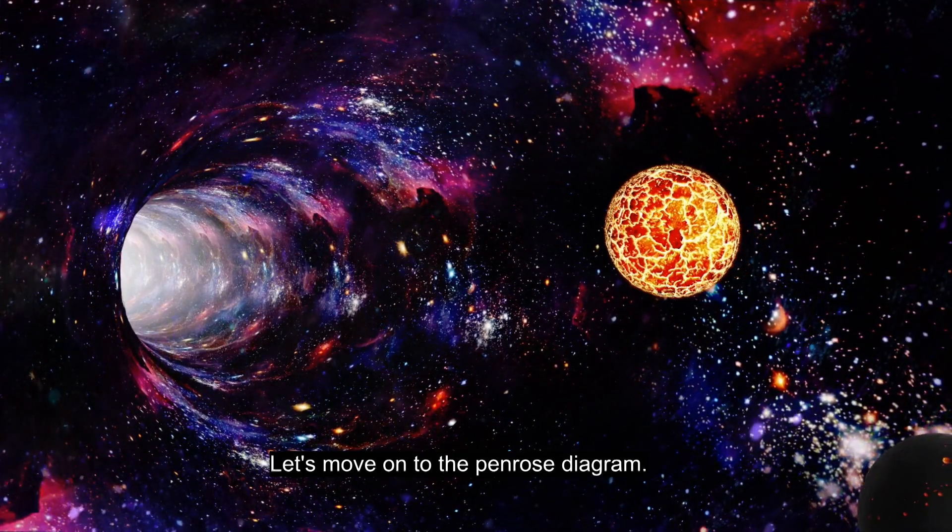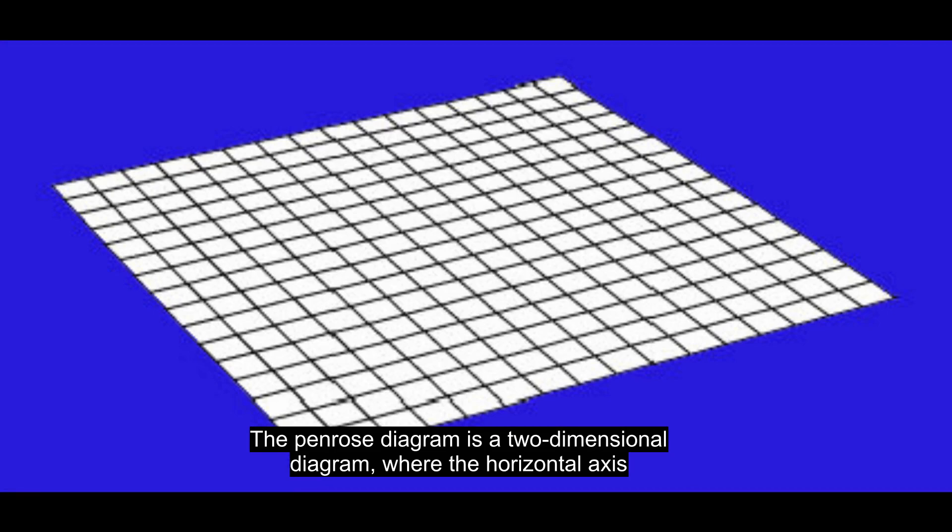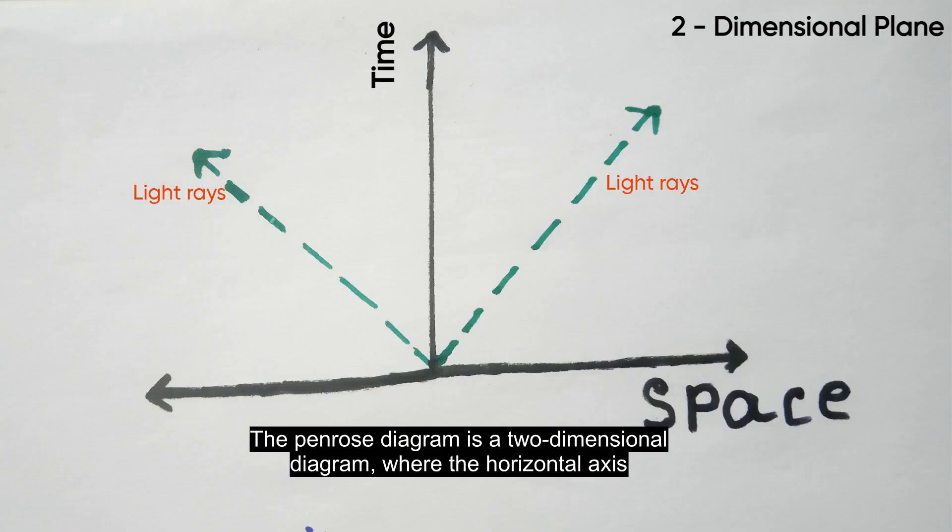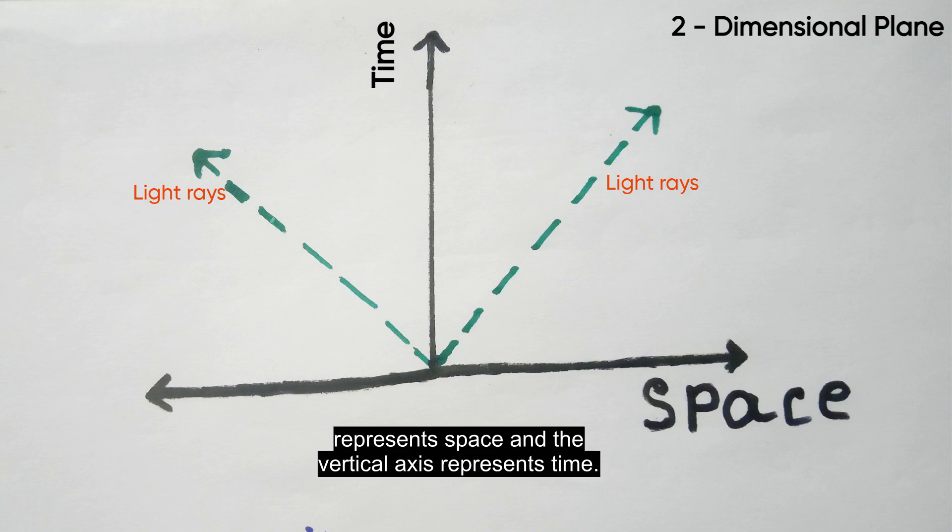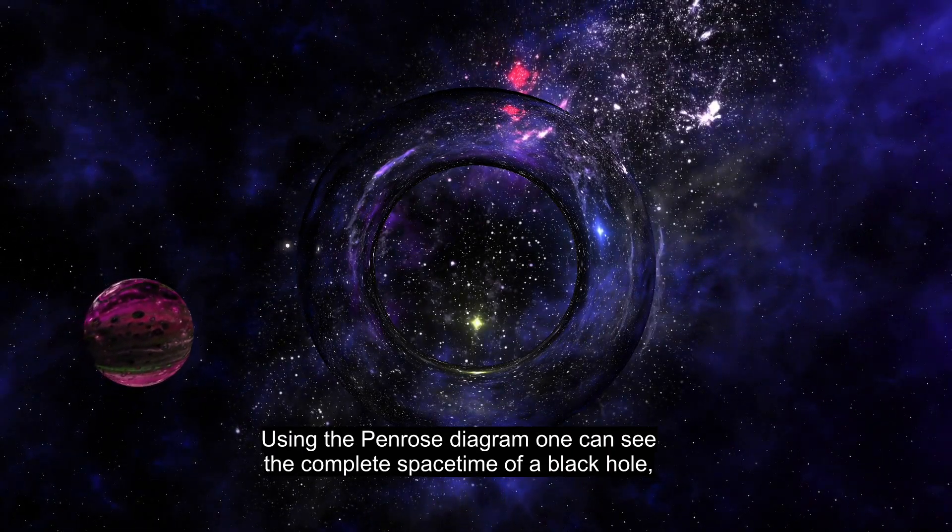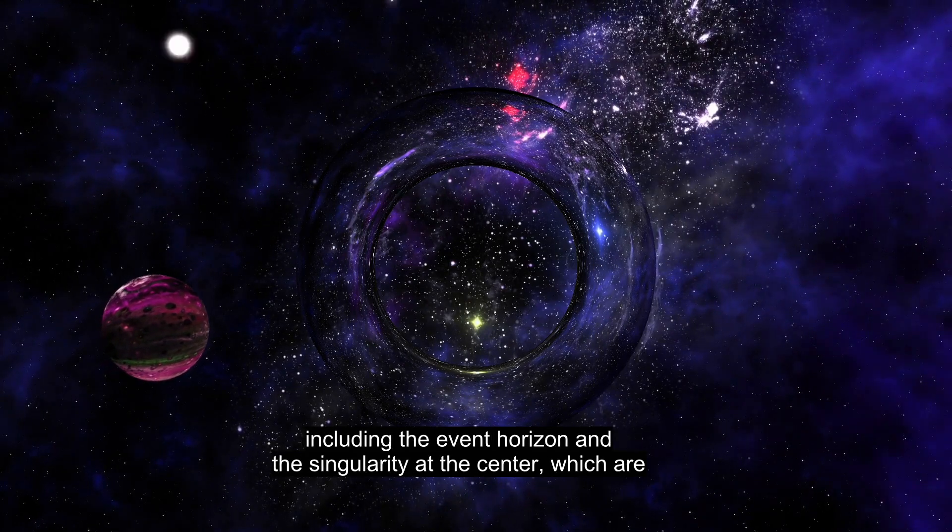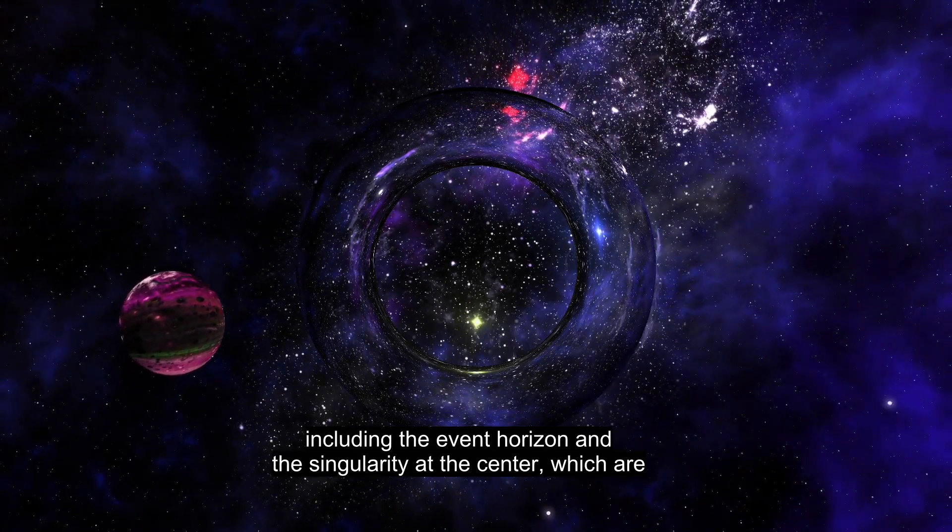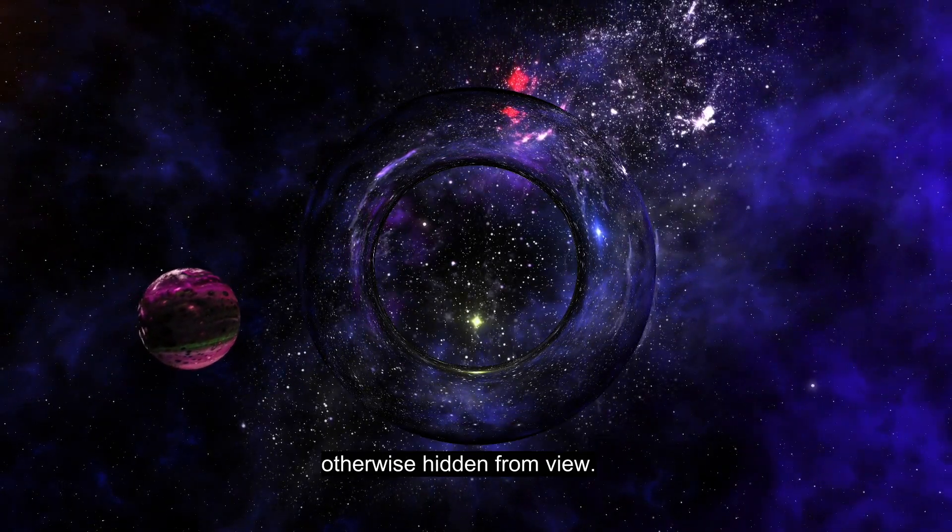Let's move on to the Penrose Diagram. A Penrose Diagram is a two-dimensional diagram where the horizontal axis represents space and the vertical axis represents time. Using the Penrose Diagram, one can see the complete spacetime of a black hole, including the event horizon and the singularity at the center, which are otherwise hidden from view.